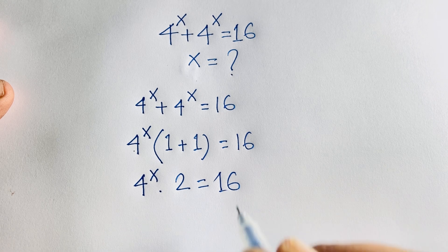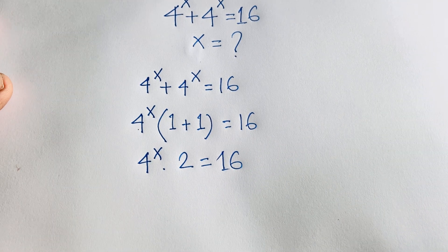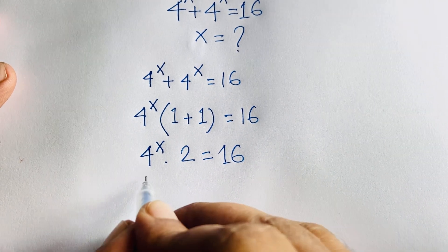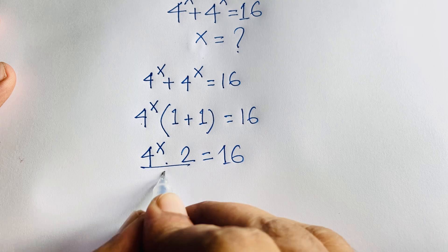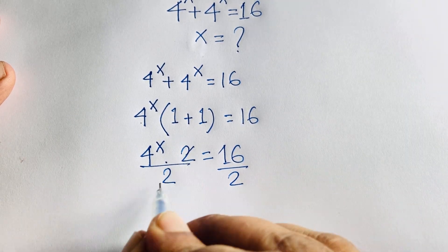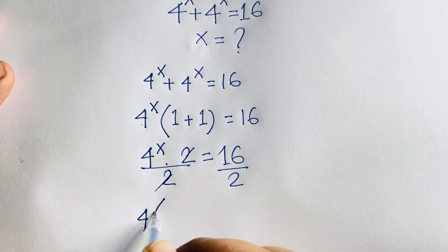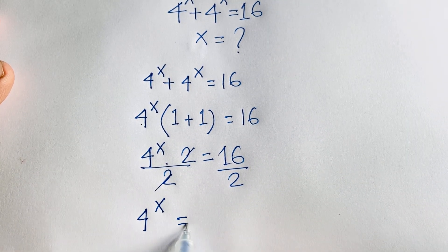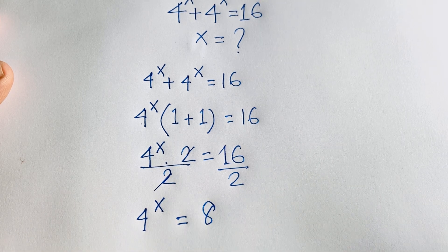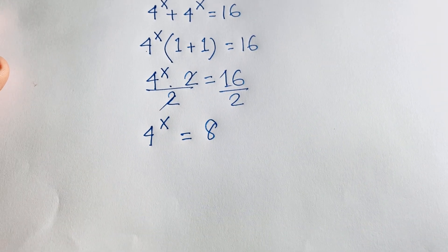I solve this question step by step. This equation gives us: divide both sides by 2. The 2 cancels and we find out 4 to the power x is equal to 8.